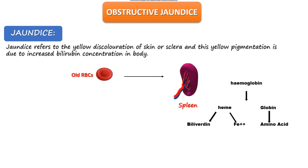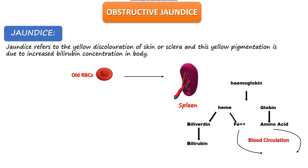The iron, like amino acids, goes back into blood circulation for reuse. Bilirubin is further converted and circulates throughout the blood. At this stage, this bilirubin is called unconjugated bilirubin, and it is circulating throughout the blood.